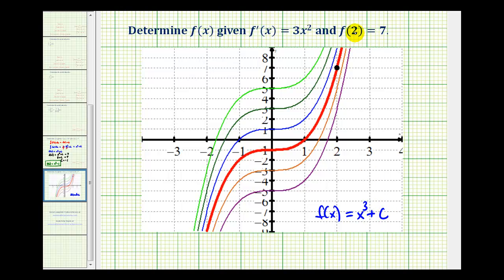But since we were given that f(2) equals 7, which means when x is 2, y has to be 7, this point must be on the exact function that we're looking for, which is this point here.